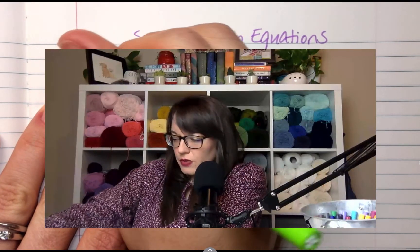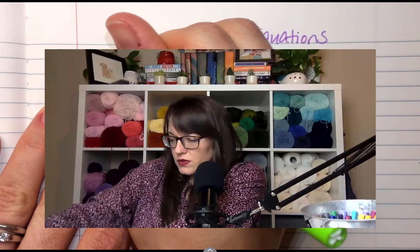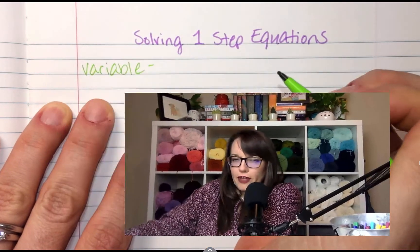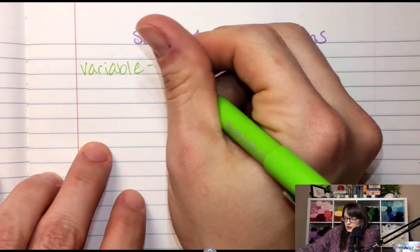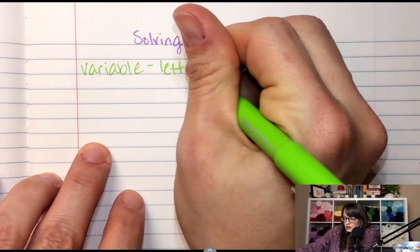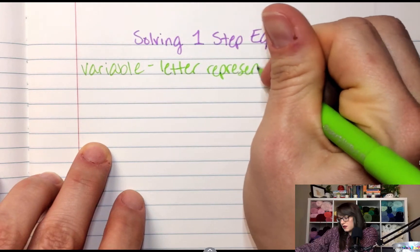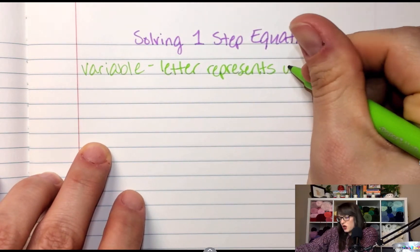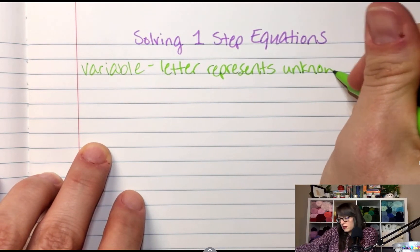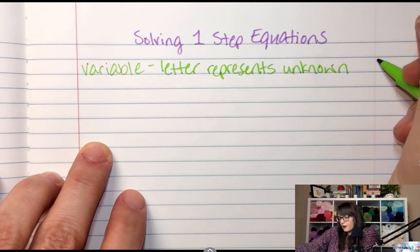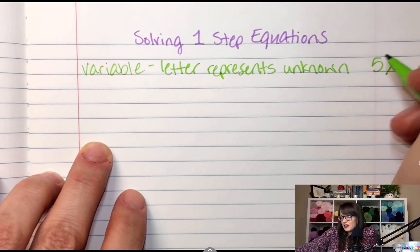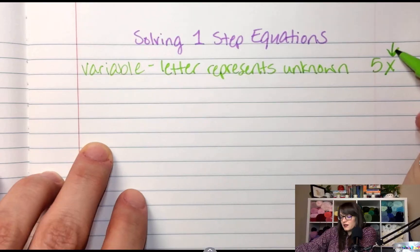We have variable. A variable is a letter that represents an unknown, so like 5X, the X here is the variable. It's my unknown, I don't know what X is yet.